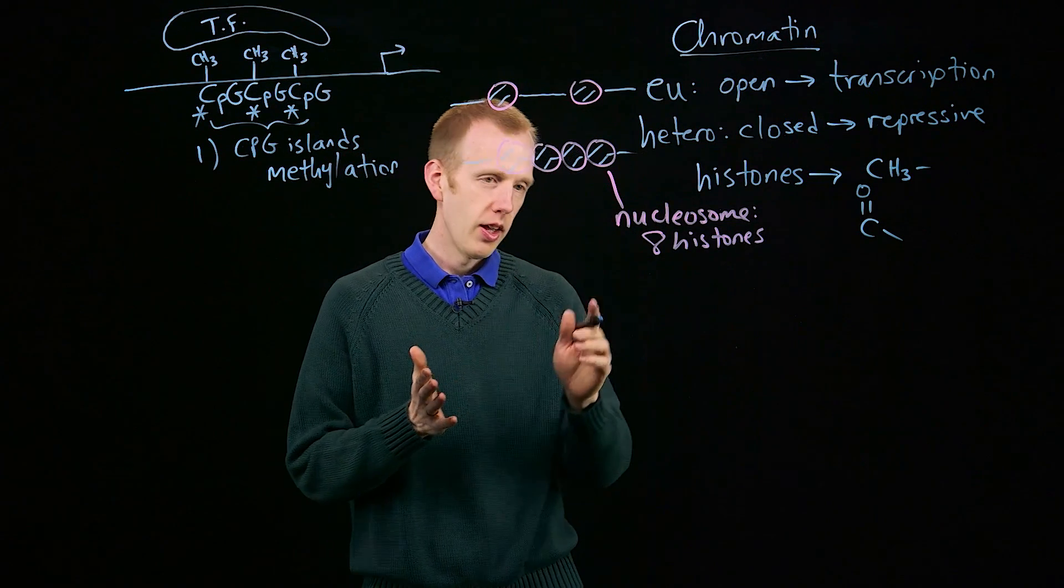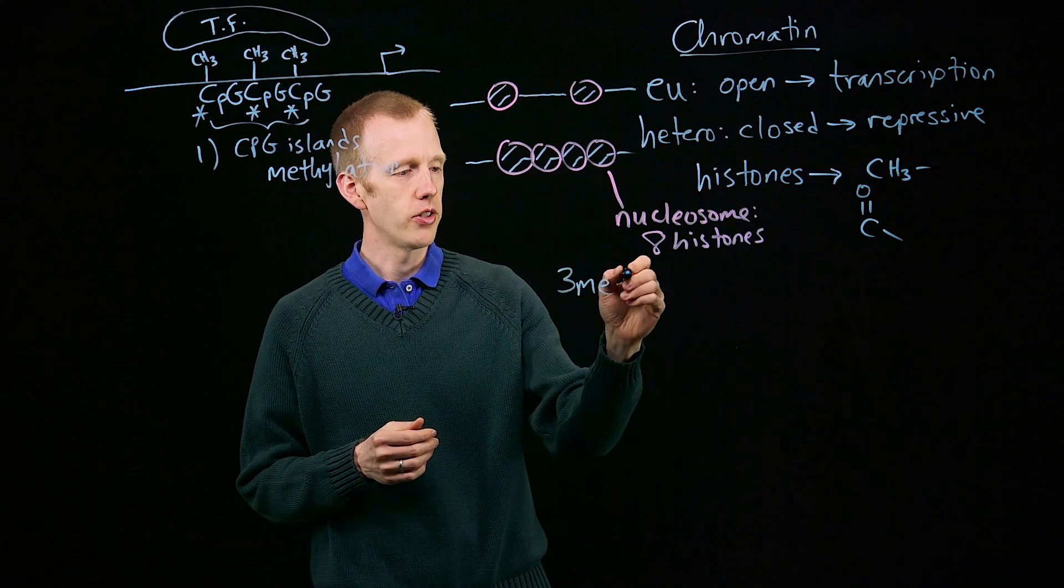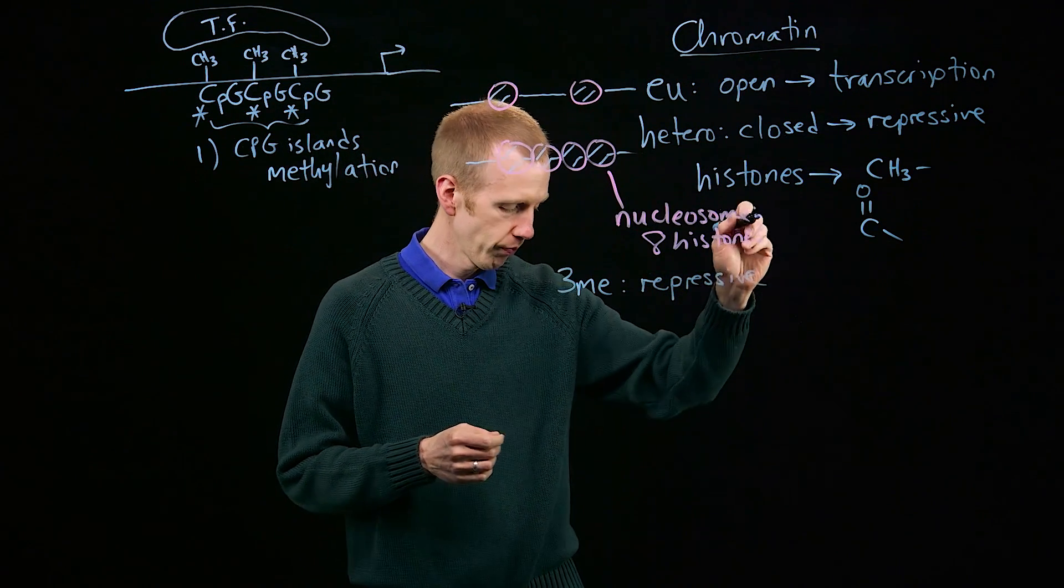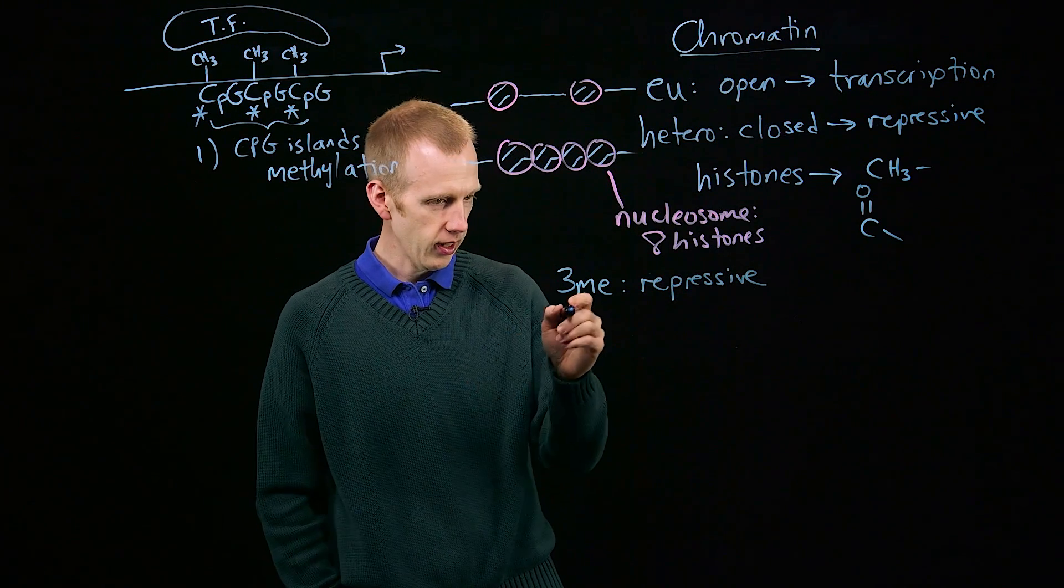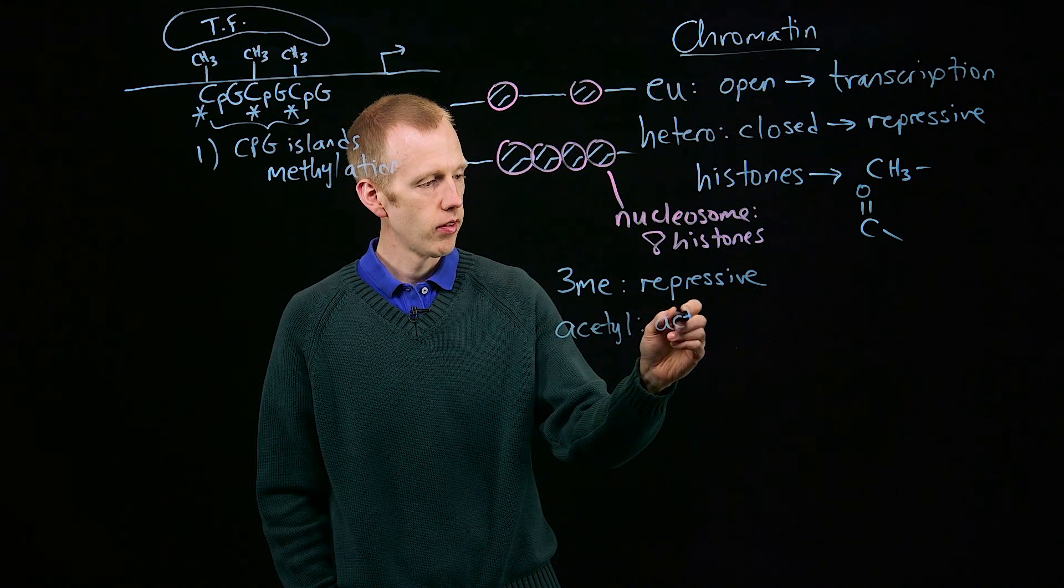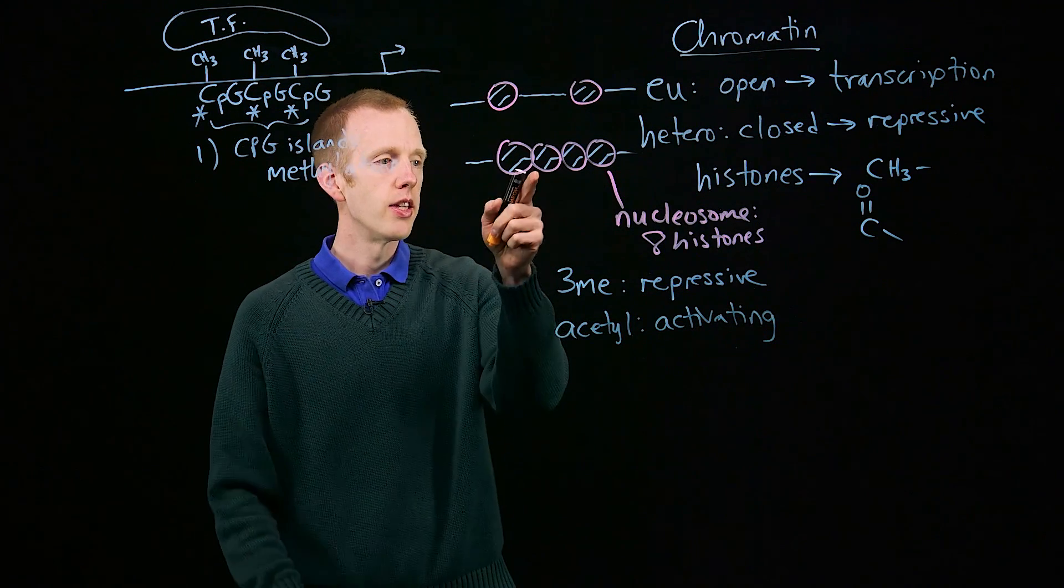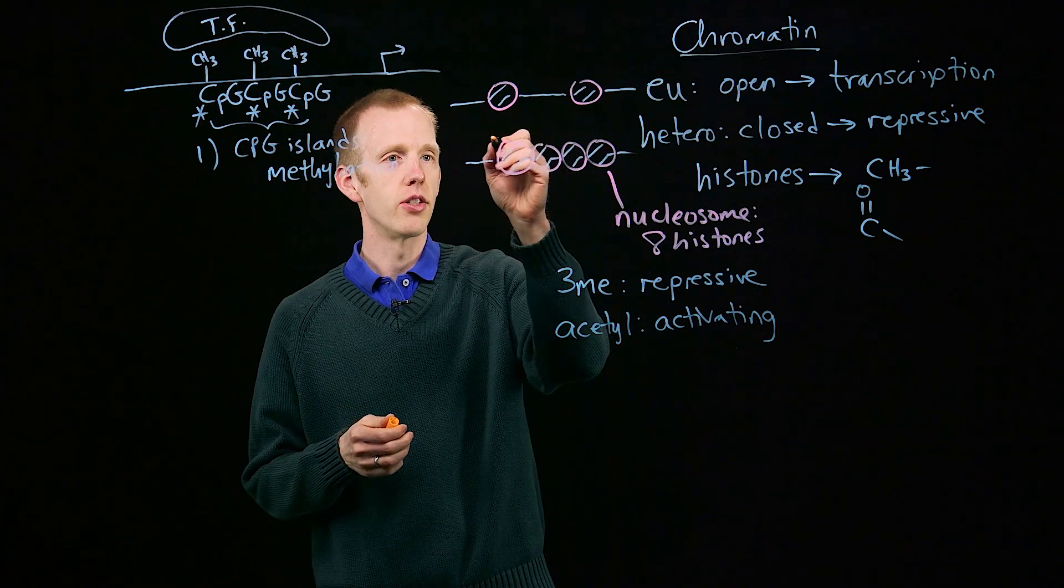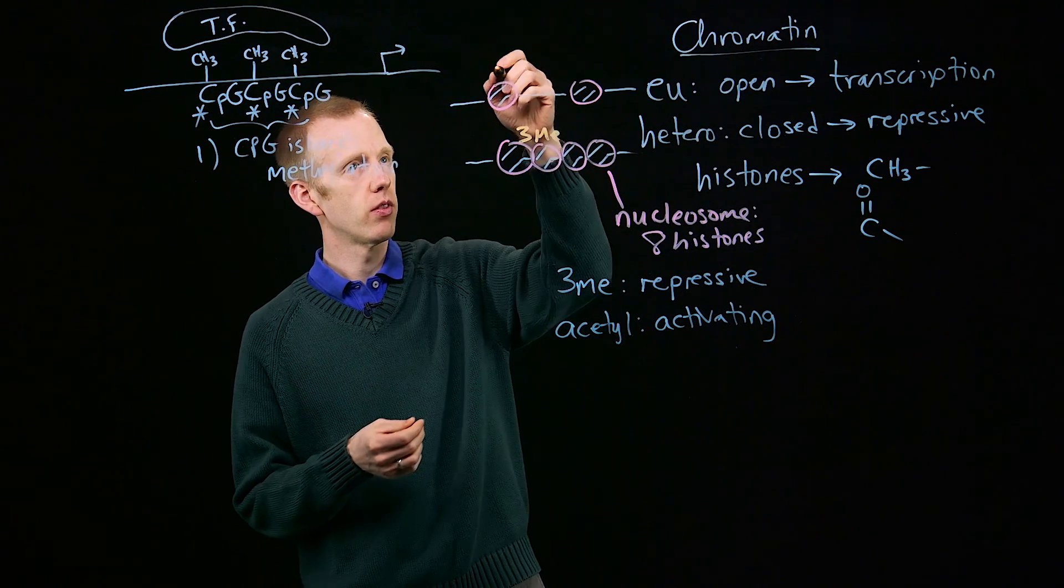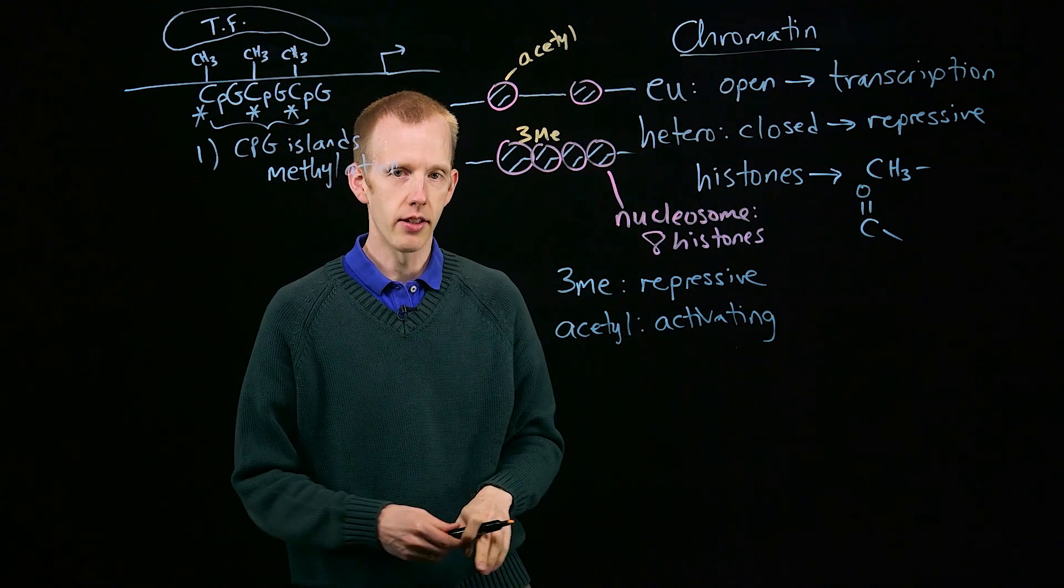In general, trimethylation, where you put three methyl groups on a histone, is repressive. And what's activating is acetylation. In other words, this is repressive. One would predict that these histones have been trimethylated. And in active or euchromatic nucleosomes, there are probably acetyl groups that have been added to these nucleosomes.